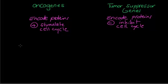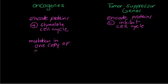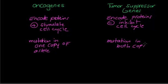Now, regarding the mutation required: for oncogenes, you need a mutation in only one copy of the allele to form the oncogene. For tumor suppressor genes, on the other hand, you need a mutation in both copies of the allele. We call the oncogene process a one-hit process.